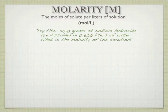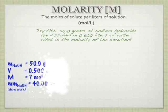Let's say we have 50 grams of sodium hydroxide dissolved in 0.5 liters of water. What's the molarity? We know that we have 50 grams, our volume is 0.5 liters, we're looking for molarity which is moles per liter. Sometimes you'll see the unit for molarity be the capital M, but people are trying to get away from that. You're better off just writing out moles per liter, mol/L.